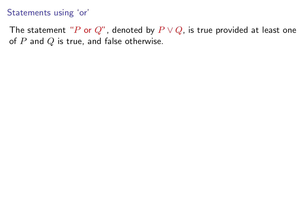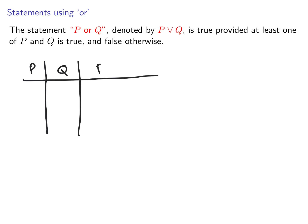The second connective is 'or'. You have two statements p and q. The statement 'p or q' is true provided at least one of p and q is true, and false otherwise. Again, looking at the truth table with four combinations — true-true, true-false, false-true, false-false — 'p or q' is true for the first line because both are true, true for the second because p is true, true for the third because q is true, and false for the bottom line.